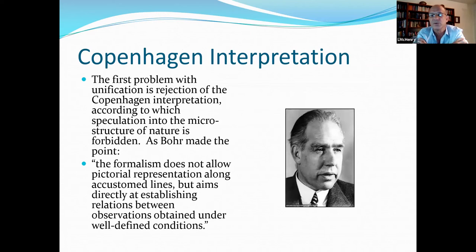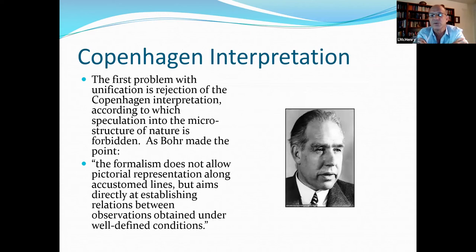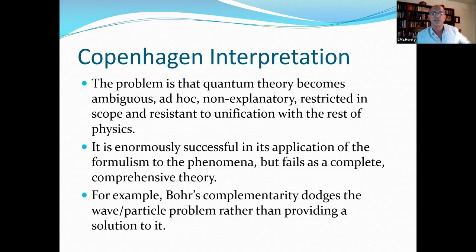So, another major stumbling block here to unification is the Copenhagen interpretation. Something has definitely got to go. The first problem here is rejection of Bohr's Copenhagen interpretation, according to which speculation into the microbe structure of nature is forbidden. As Bohr made the point, the formalism does not allow a pictorial representation along the custom lines, but aims directly at establishing relations between observations obtained under well-defined conditions. So, the problem with quantum theory becomes ambiguous, ad hoc, non-explanatory, and restricted in scope and resistant to unification with the rest of physics.